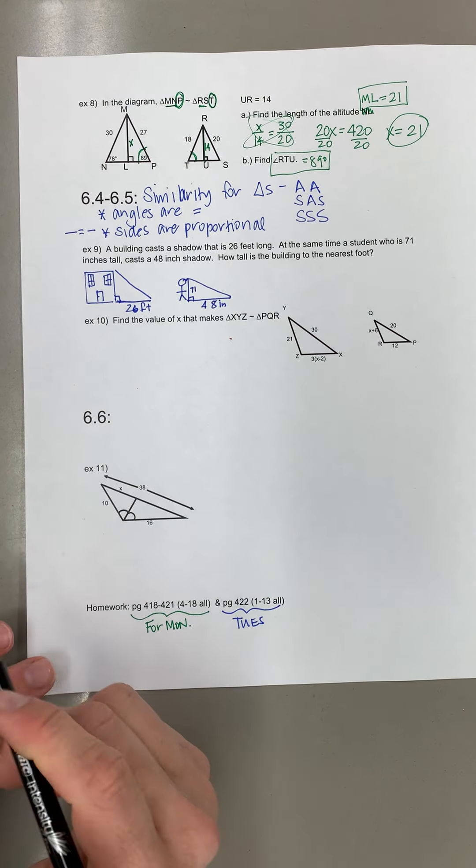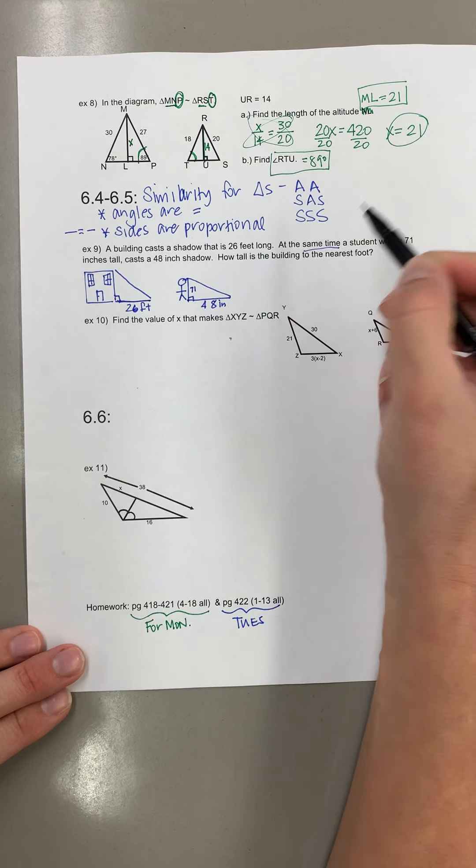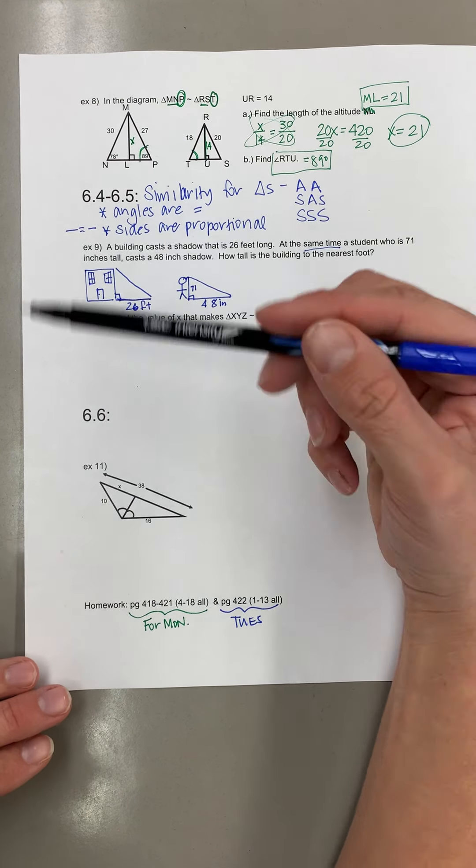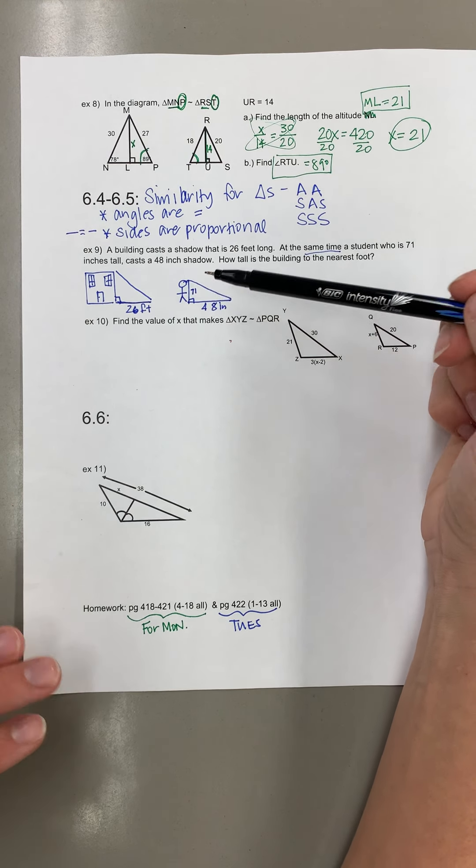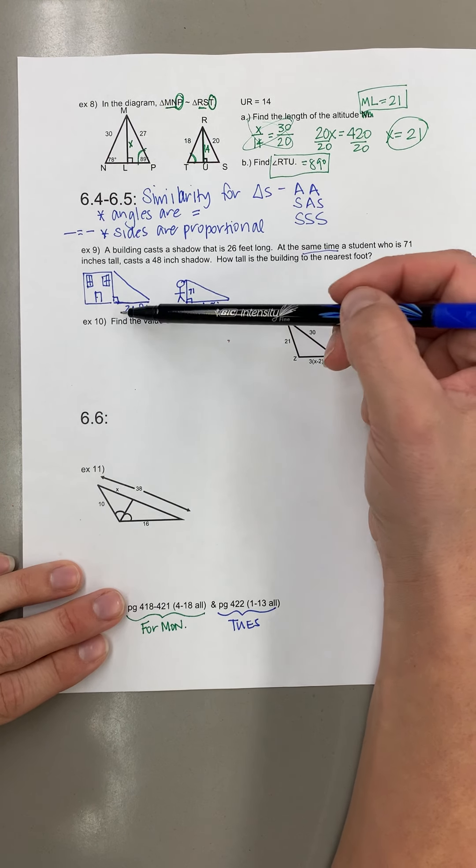And their shadow should be 48 inches. How tall is the building to the nearest foot? And it says at the same time. What that's saying is the sun is at the same height in the air, so like up in the sky. So the shadows should be proportional.